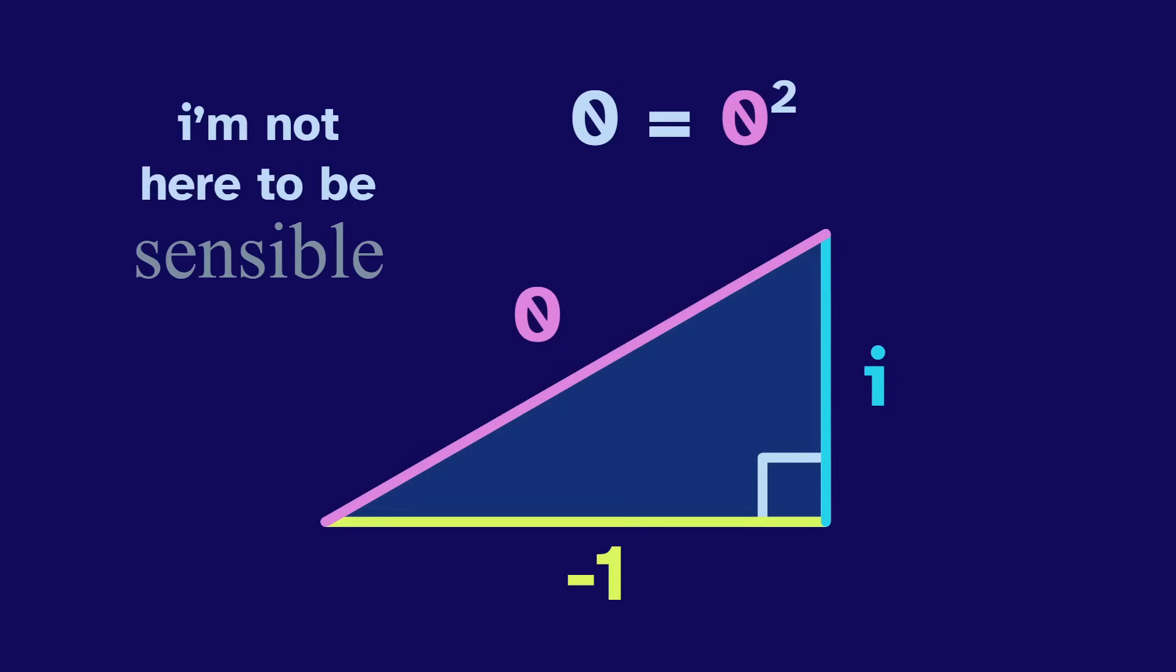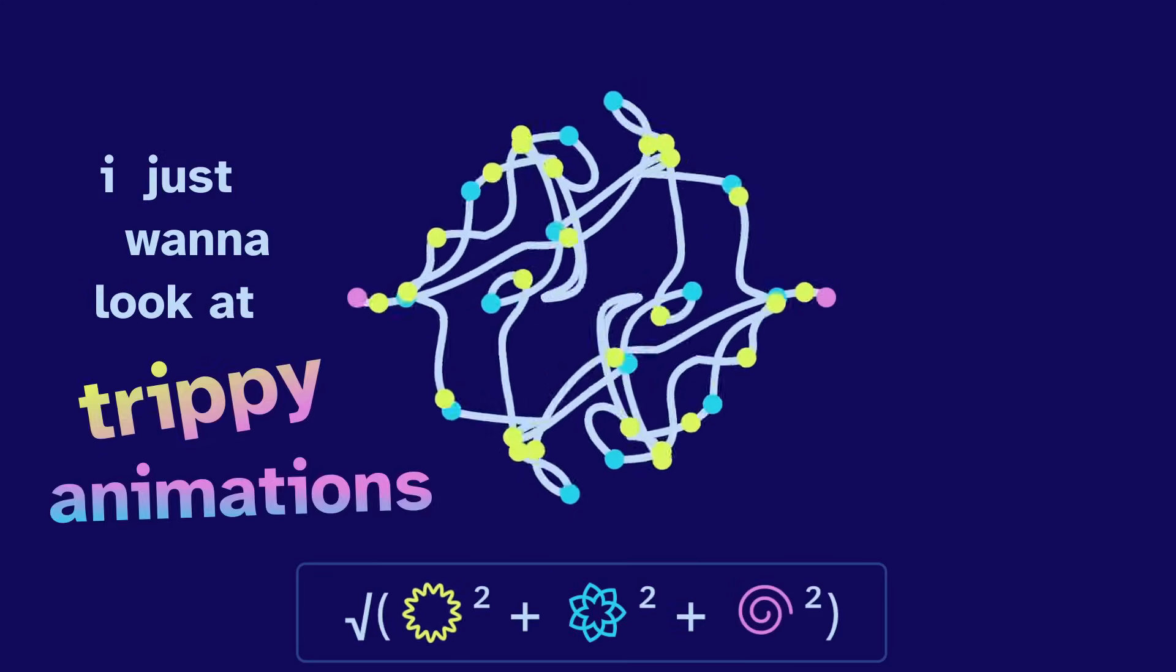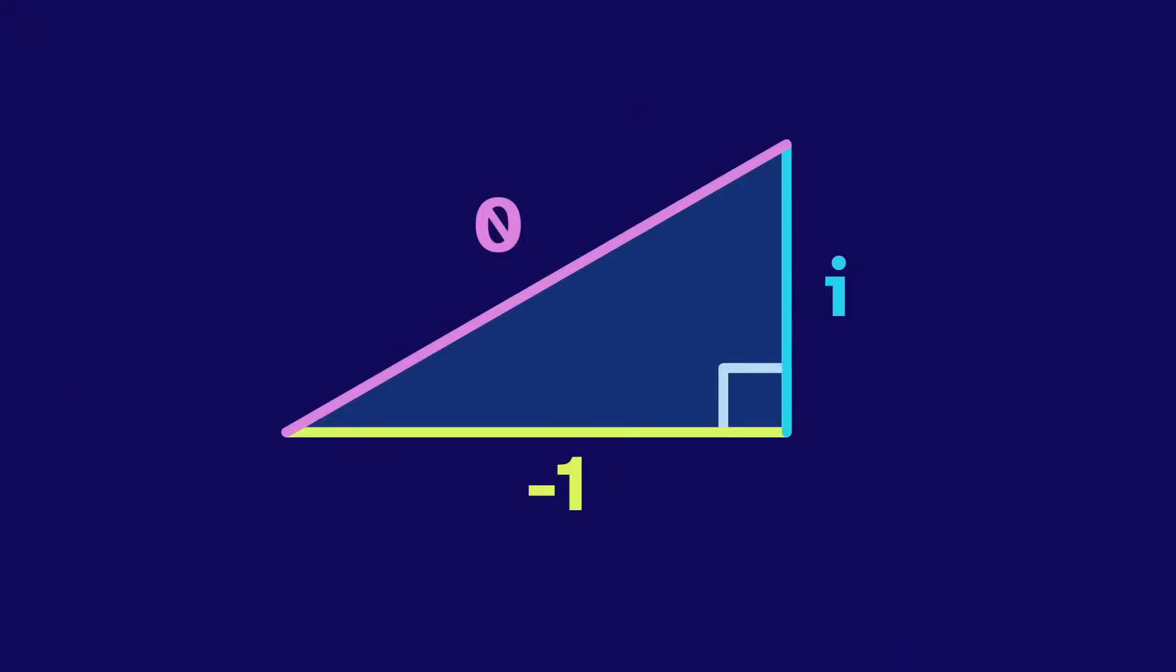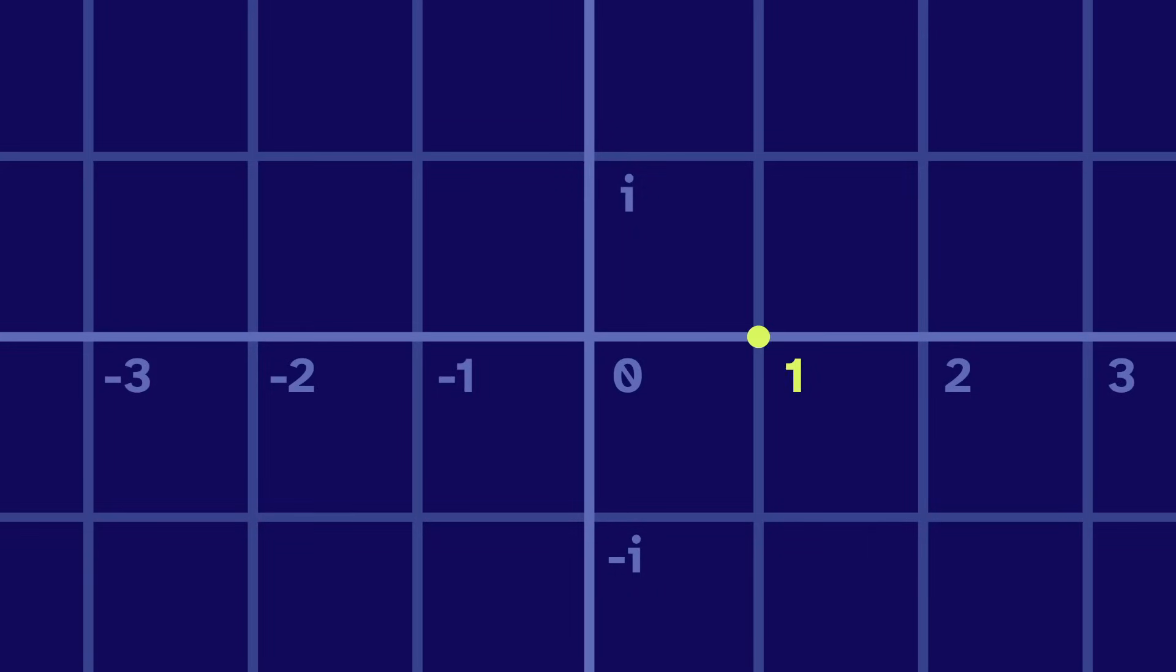But I'm not here to be sensible. I just want to look at trippy animations. So instead of negative 1, let's say this side length is a square. And we interpret that as a set of complex numbers. The complex numbers are two-dimensional, so we can take all the numbers that form a square.